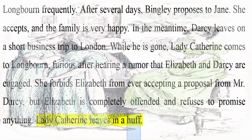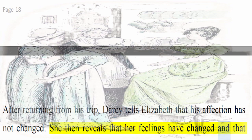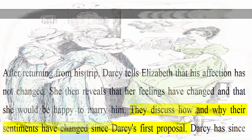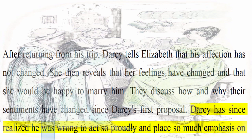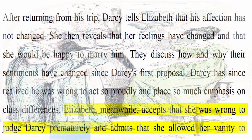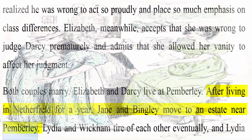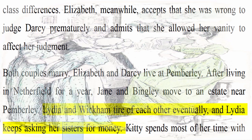After returning from his trip, Darcy tells Elizabeth that his affection has not changed. She then reveals that her feelings have changed and that she would be happy to marry him. They discuss how and why their sentiments have changed since Darcy's first proposal. Darcy has since realised he was wrong to act so proudly and place so much emphasis on class differences. Elizabeth, meanwhile, accepts that she was wrong to judge Darcy prematurely and admits that she allowed her vanity to affect her judgement. Both couples marry. Elizabeth and Darcy live at Pemberley. After living in Netherfield for a year, Jane and Bingley move to an estate near Pemberley. Lydia and Wickham tire of each other eventually, and Lydia keeps asking her sisters for money. Kitty spends most of her time with her two elder sisters, and her education and character begin to improve.